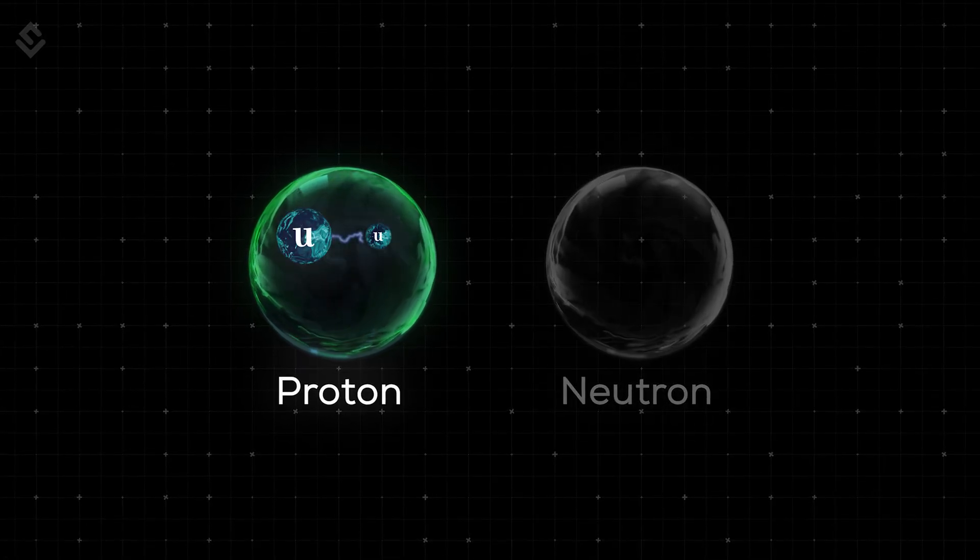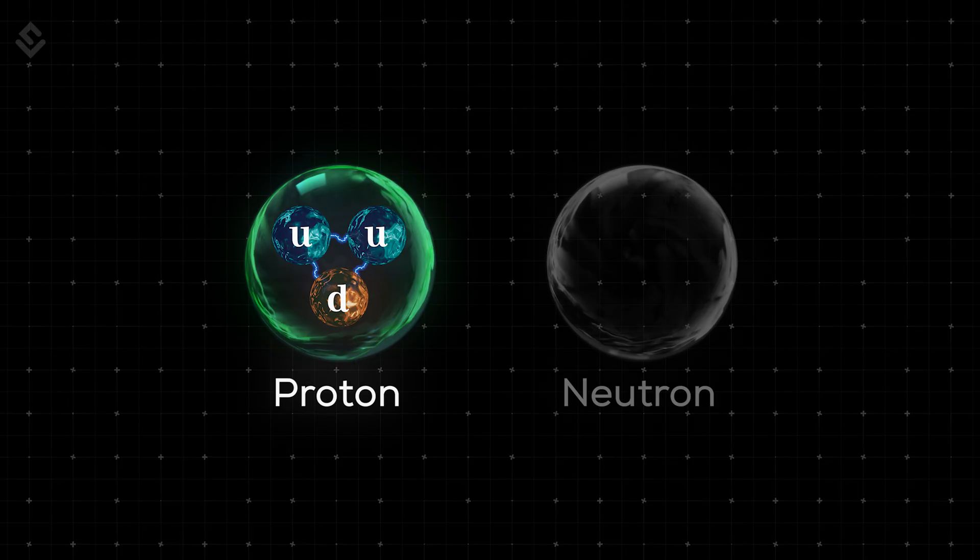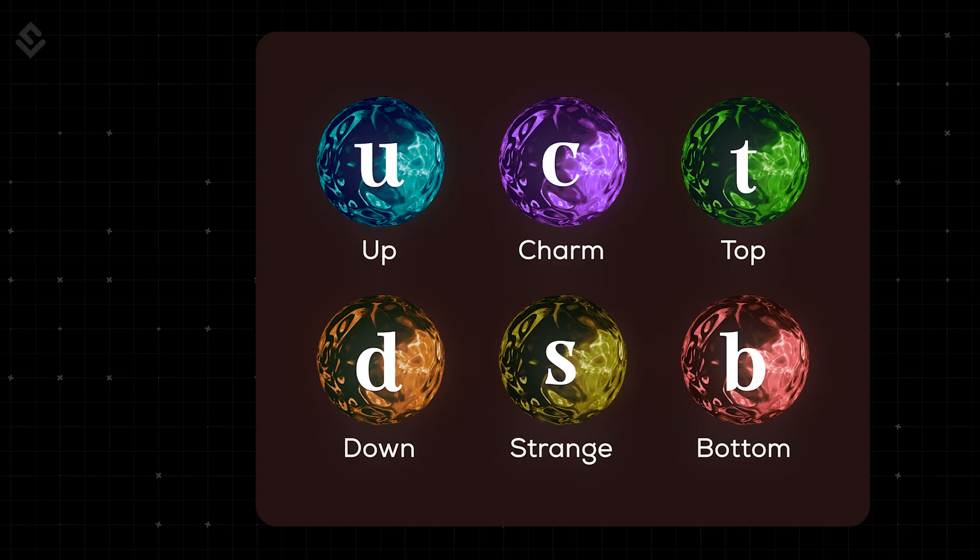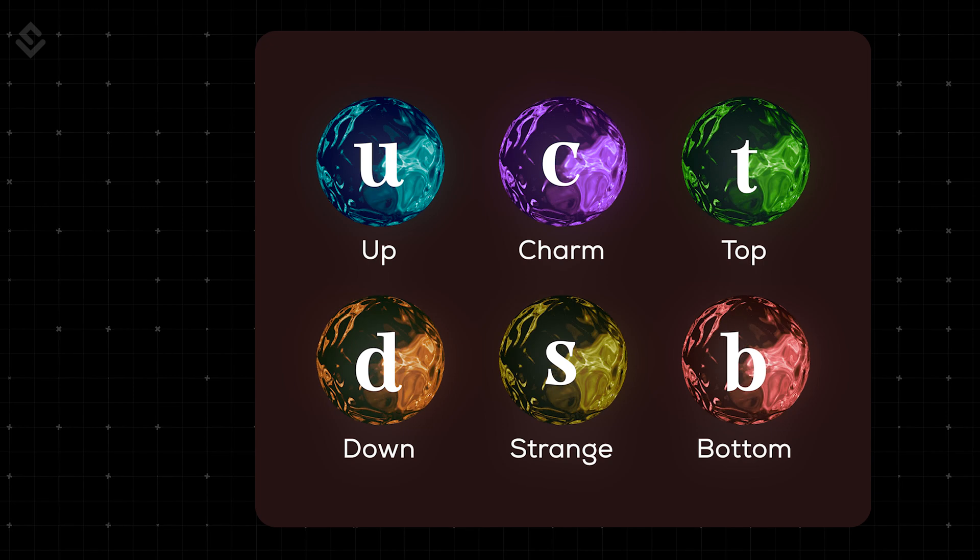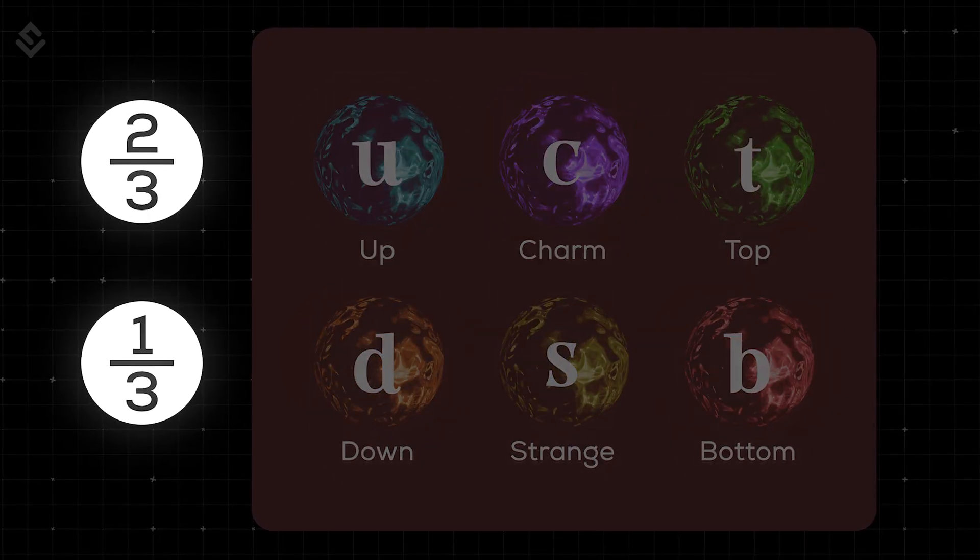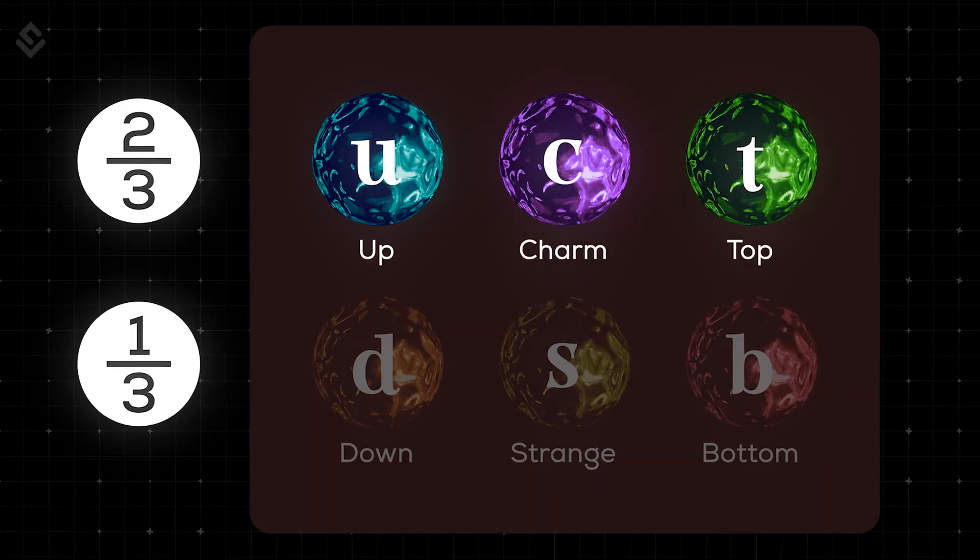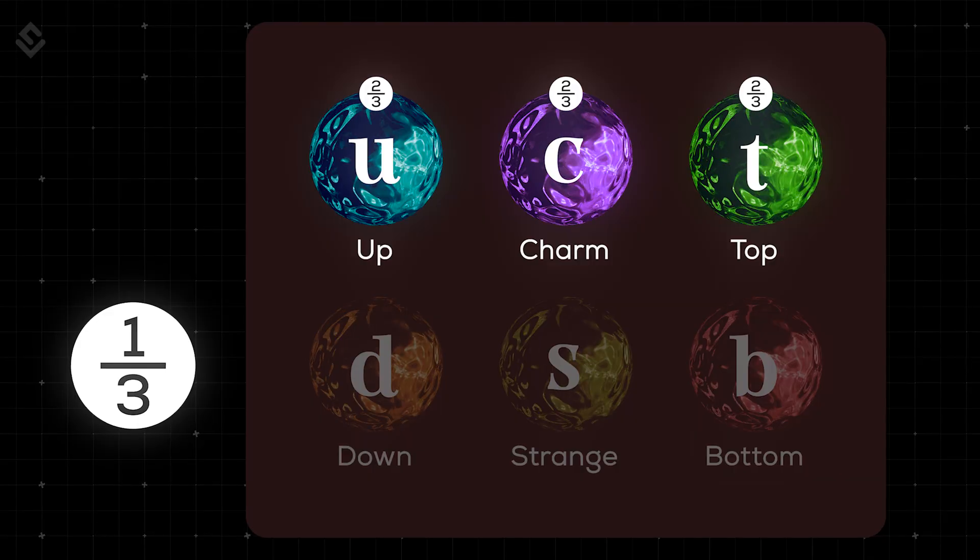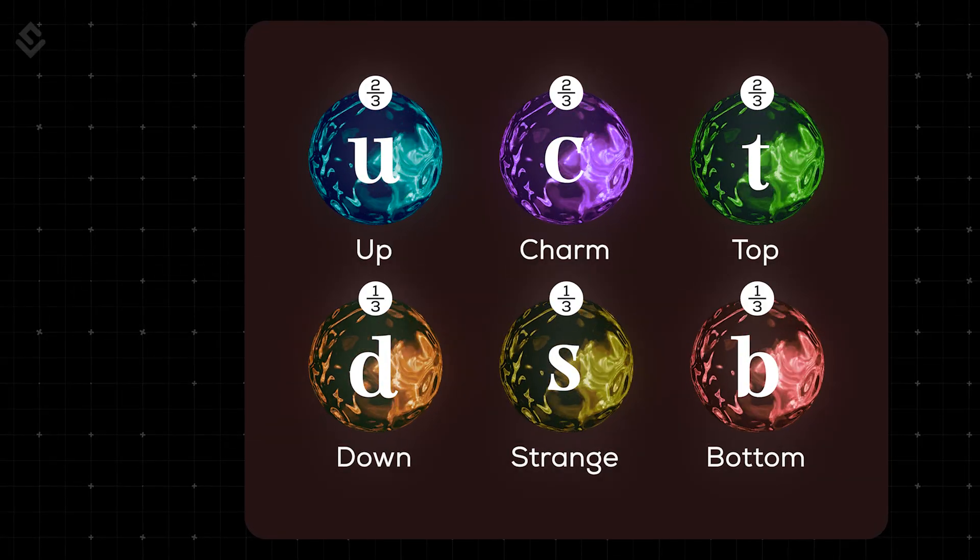Protons are composed of two up quarks and one down quark, and neutrons are composed of two down quarks and one up quark. Each quark has charge values in terms of 1/3 and 2/3. All the upper family quarks, such as up, top, and charm, have 2/3 charge. And all the lower family quarks, such as bottom, down, and strange, have 1/3 charge.